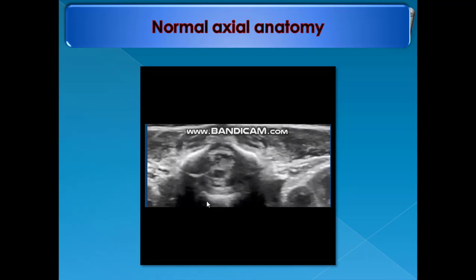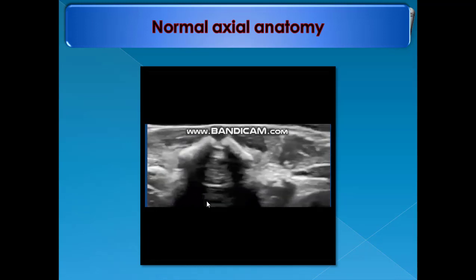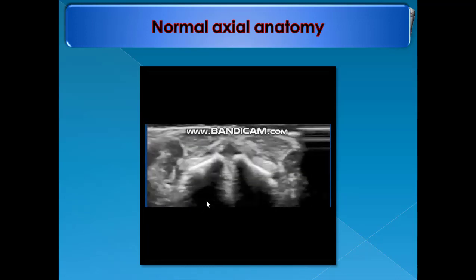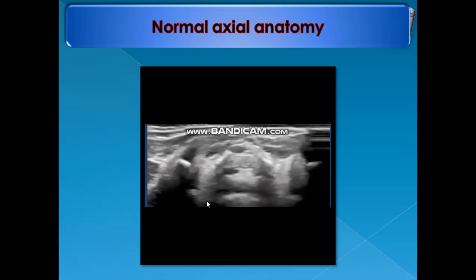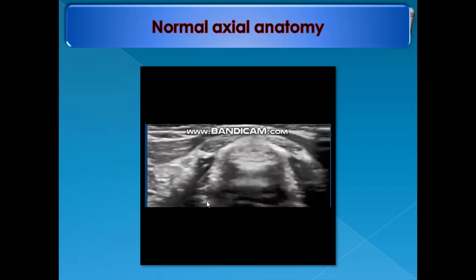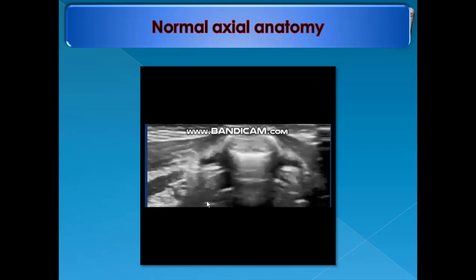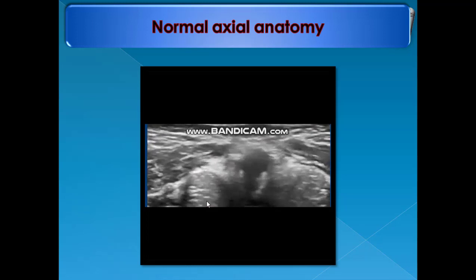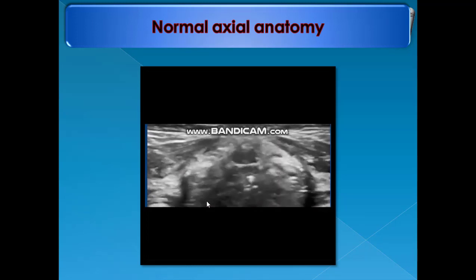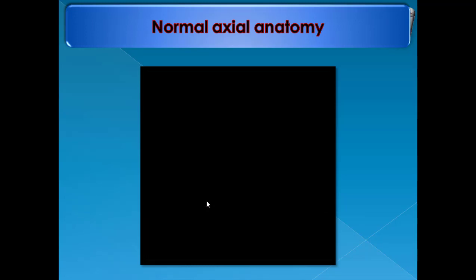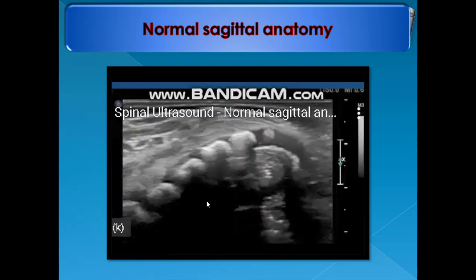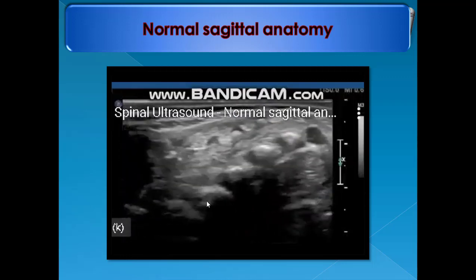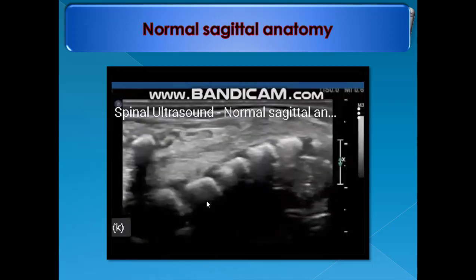This is an example of normal axial anatomy by survey, starting from the mid-thoracic region and moving downwards to the sacrococcygeal region — a rapid technique just for the survey. This is another example of the sagittal survey technique, sweeping from one side to the other.